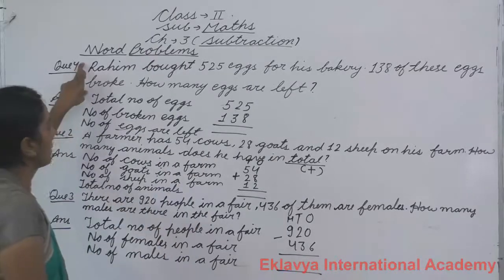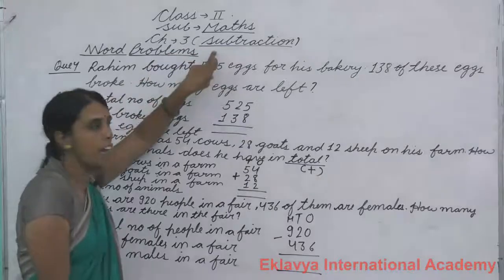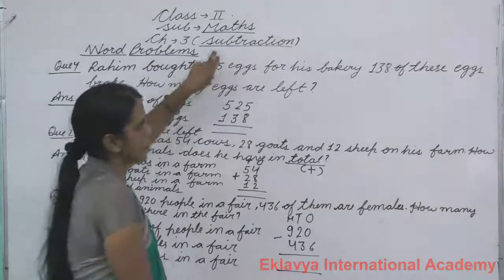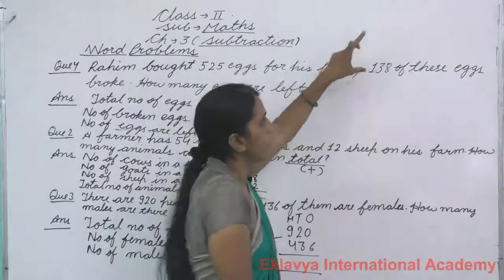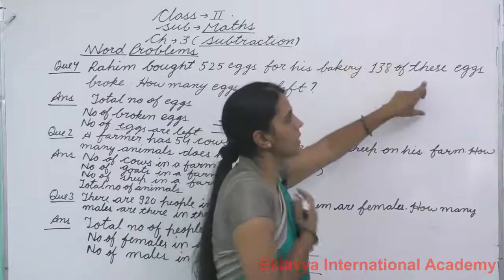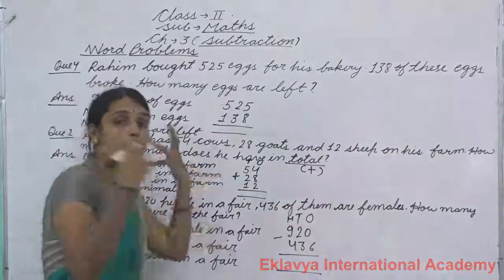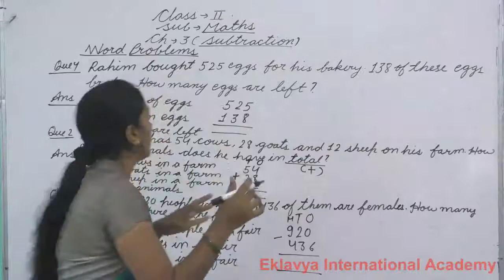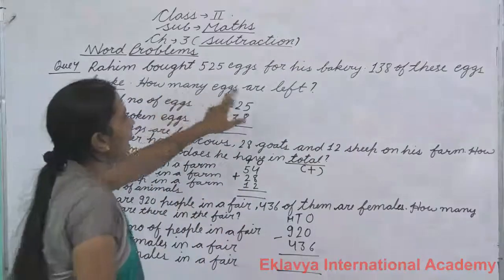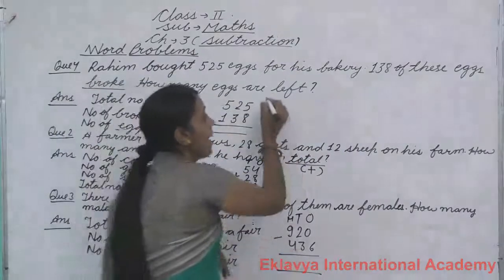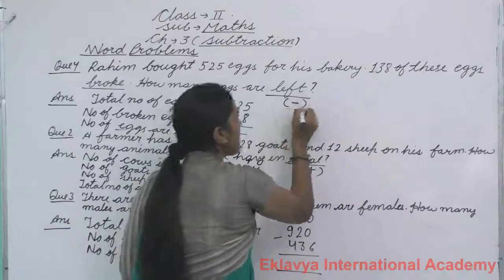We will read again. Raheem bought 525 eggs for his bakery. 138 of these eggs broke. How many eggs are left? Subtraction.